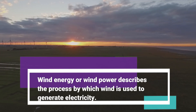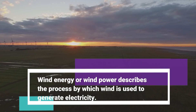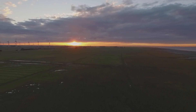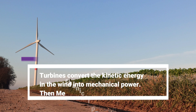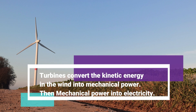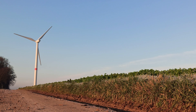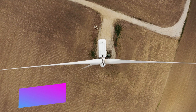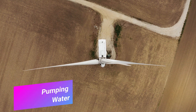Wind energy, or wind power, describes the process by which wind is used to generate electricity. Turbines convert the kinetic energy in the wind into mechanical power. Mechanical power can also be utilized directly for specific tasks, such as pumping water.